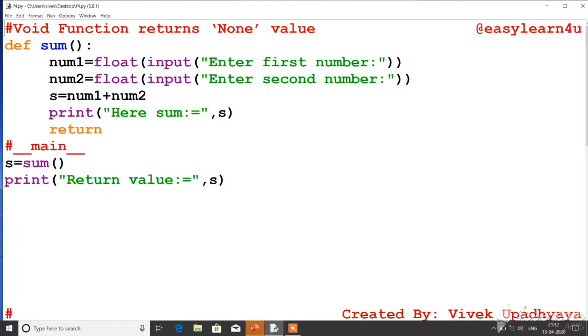Agar aap isse dhyan se dekhen to here function definition ke last me maine ek return statement likha hua hai jo ki koi value as such return nahi kar raha. Usually hum log kya karte hain yaha par hum koi value return karte hain. Say maine yaha par s return kar diya to s ki jo bhi computed value hogi wo aapki is s ke andar save ho jati hai, return ho kar.